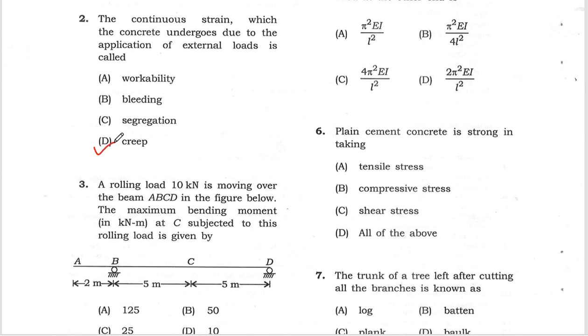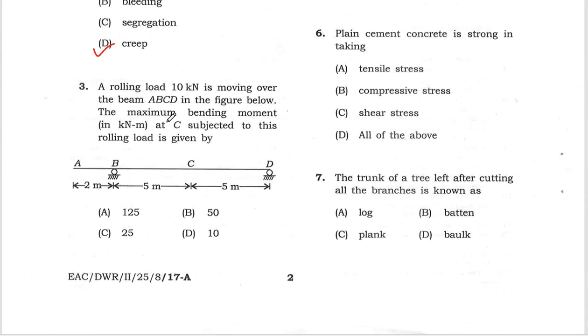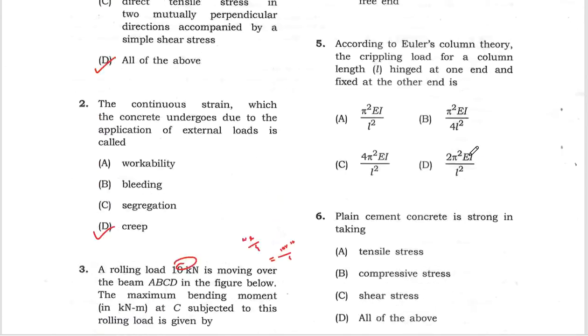Next question about rolling load: What is the maximum bending moment at C, the midpoint? The maximum bending moment is wl by 4. Here w is 10, l is 10 because the distance to midpoint is 5 to 5, so 10 divided by 4 gives us 25. Option number C is correct.